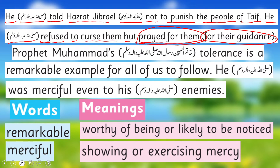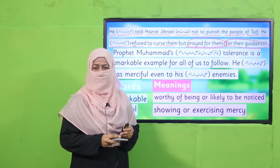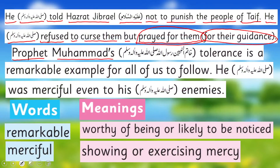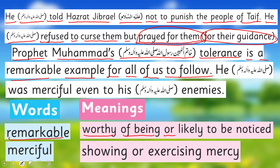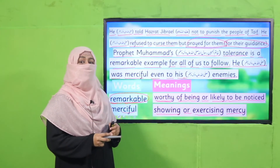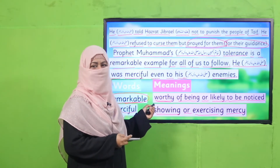Allahu Akbar! This is the beautiful Sunnah. When someone does something bad with you, instead of reacting, make dua — ya Allah, make things easy; there is something wrong with this person. This is not easy; we need to work very hard on ourselves. Prophet Muhammad Khatimul Nabeen Rasulullah sallallahu alaihi wa sallam's tolerance is a remarkable example for all of us to follow. 'Remarkable' means worthy of being noticed. He sallallahu alaihi wa sallam was merciful even to his enemies. 'Merciful' means showing or exercising mercy — to forgive enemies and have a soft corner for them in your heart. This is the beautiful Sunnah we are learning. Inshallah, we try to practice it as well.